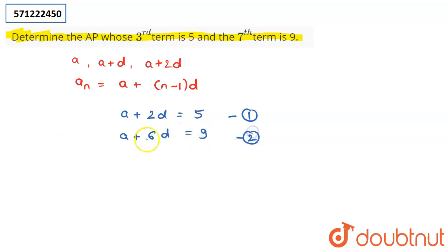From here I have derived two equations with two variables, so we can solve them. Subtract the first equation from the second: a+6d minus a+2d becomes 4d equals 9 minus 5, which is 4. From here you can say that d equals 1.